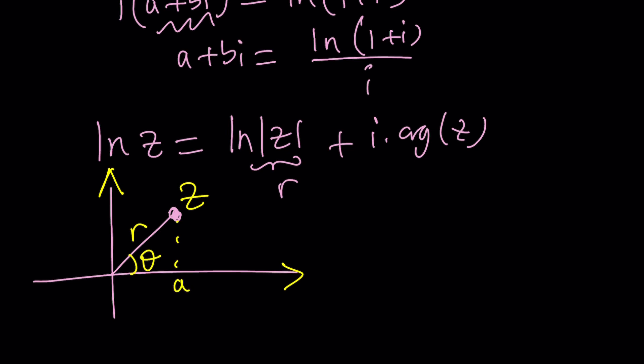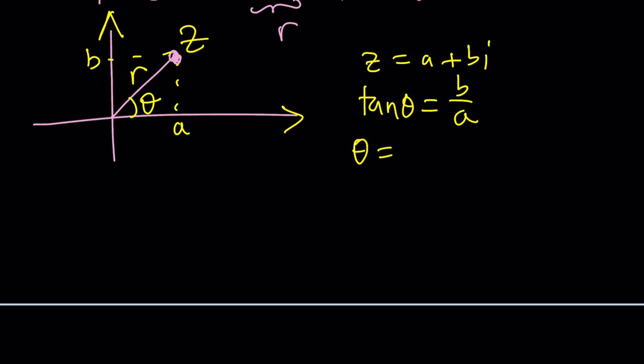And if you have the real part as a and imaginary part as b, then z can be written as a plus bi. We already talked about it, right? And tangent theta from here is given as b over a. So sometimes, not all the time, be careful,